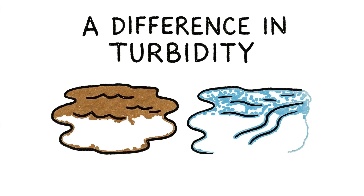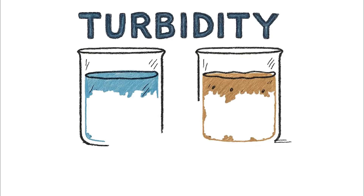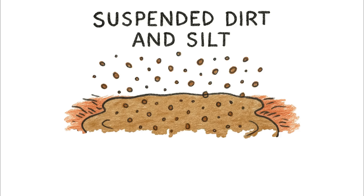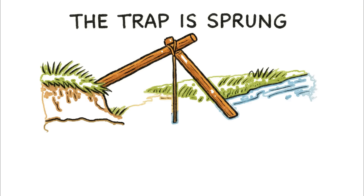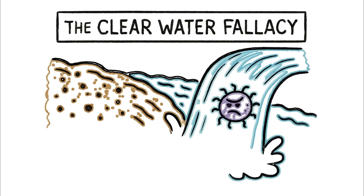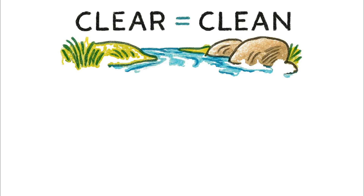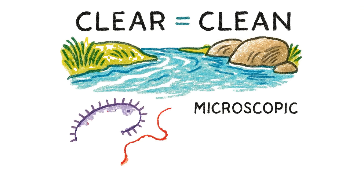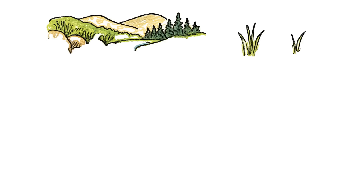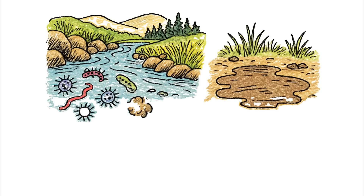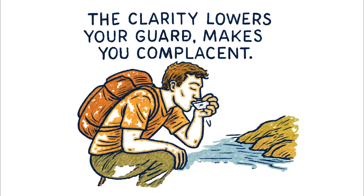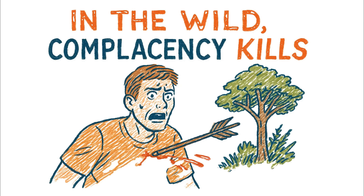What you're looking at is the difference in turbidity — simply the measure of cloudiness in a fluid. The muddy puddle has high turbidity; it's full of suspended dirt and silt. The clear stream has low turbidity, and that's where the trap is sprung. We call it the clear water fallacy. Your instincts scream that clear equals clean, but the most lethal threats in water are microscopic. They don't make the water cloudy. That pristine stream can be a paradise for pathogens, while the muddy puddle might just be muddy. The clarity lowers your guard, makes you complacent. And in the wild, complacency kills.